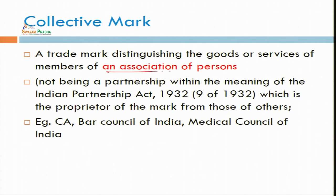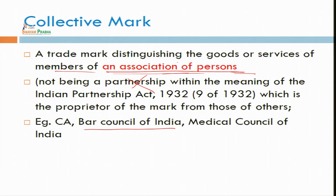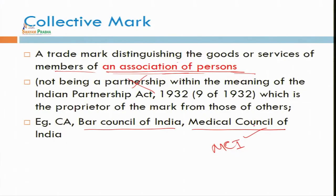Another important type of trademark is the collective mark. A collective mark is specifically assigned to an association of persons, and the trademark distinguishes the goods and services of members of that association of persons — but it should not be a partnership within the meaning of the Indian Partnership Act, 1932. For example, the Association of Chartered Accountants owns its logo. Similarly, the Bar Council of India — advocates have their different sticker or logo for recognition. MCI, the Medical Council of India, also has its own collective mark.